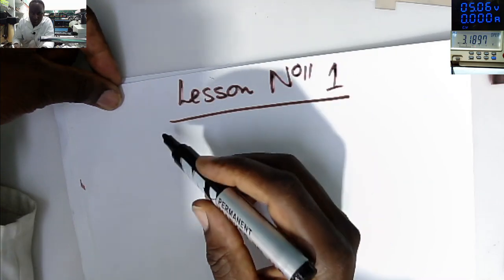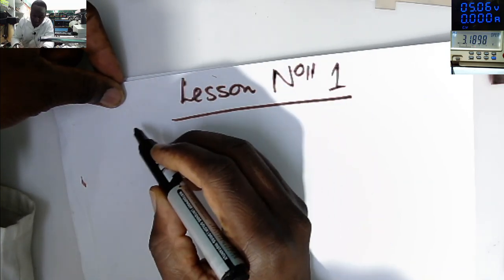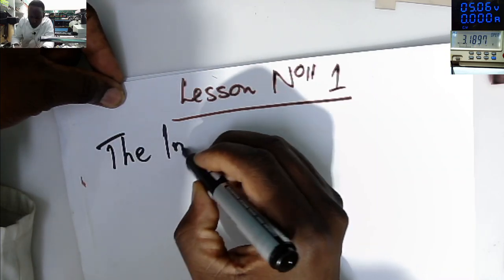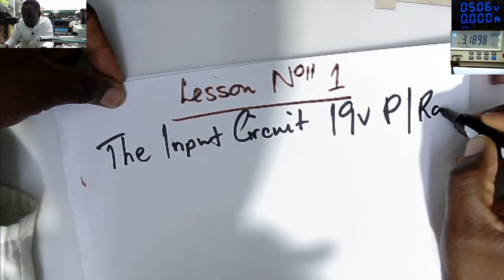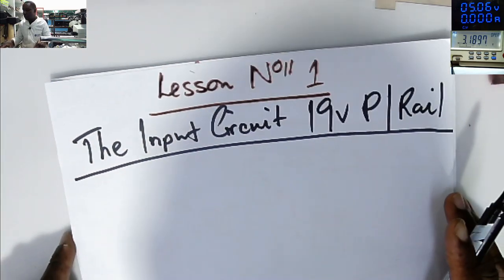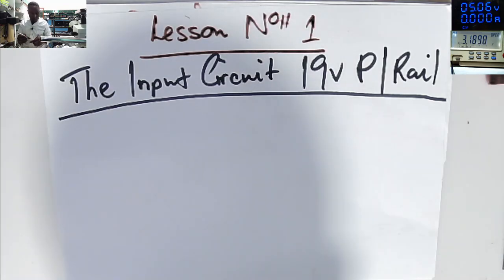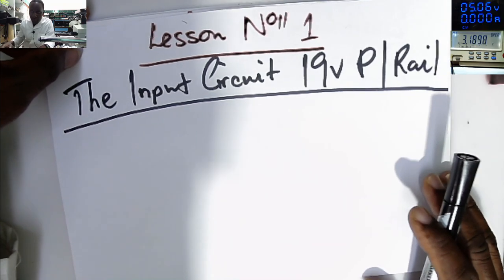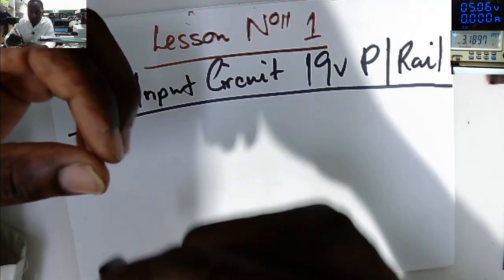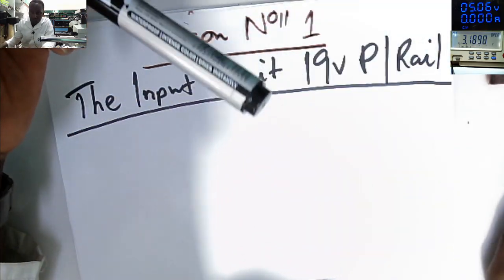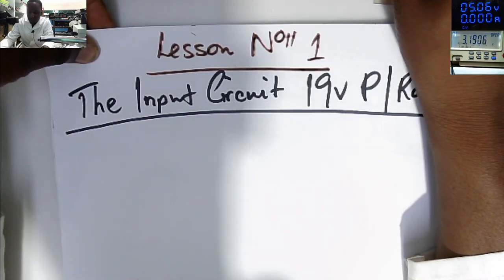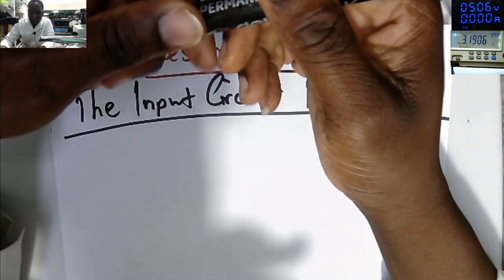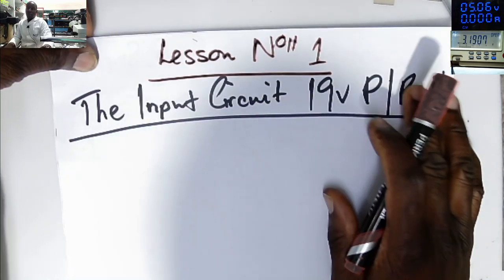Lesson Number One: I'll explain about the input circuit — the 19-volt power rail. That's the first lesson for today. We'll explain where the 19 volts from the charger goes to the laptop motherboard and how it's distributed. That's very important to know. The 19 volts is used by the motherboard, and most laptop motherboards are the same. Most can be fixed without schematics.